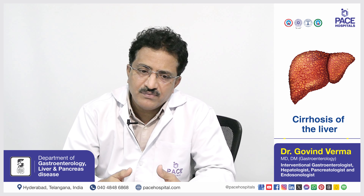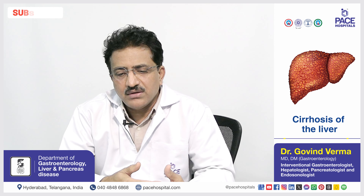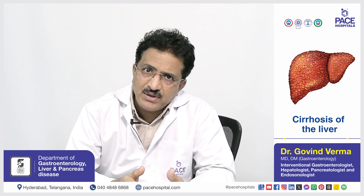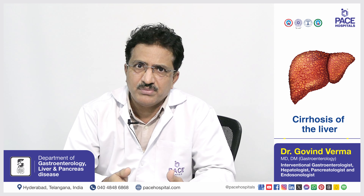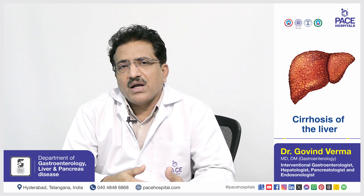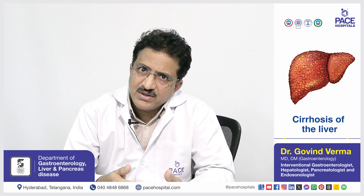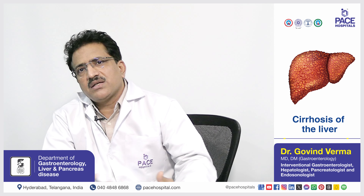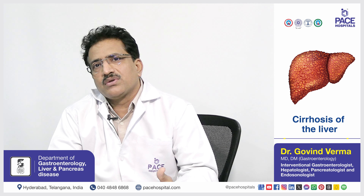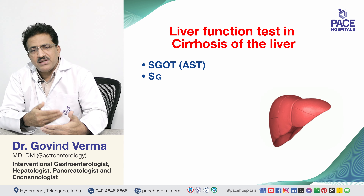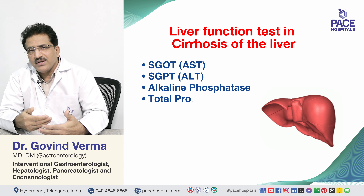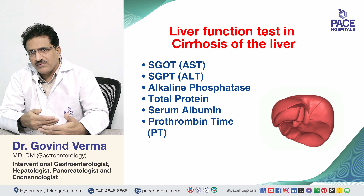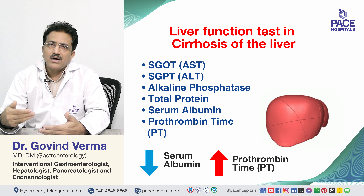In cirrhosis, most patients present with normal or elevated SGPT and SGOT. In alcoholic liver cirrhosis, SGOT is more than SGPT; in other types of cirrhosis it may be reversed. Alkaline phosphatase is usually elevated. Crucially, synthetic function markers are abnormal: albumin is very low and prothrombin time is prolonged. Just by examining these parameters, a hepatologist can suspect cirrhosis of liver.